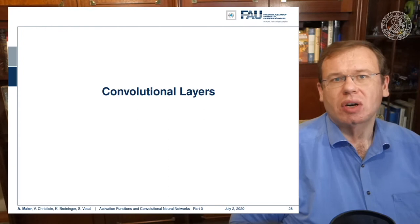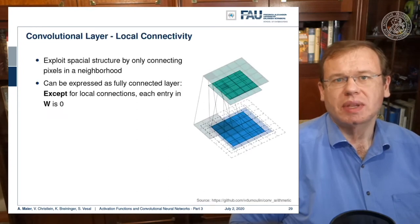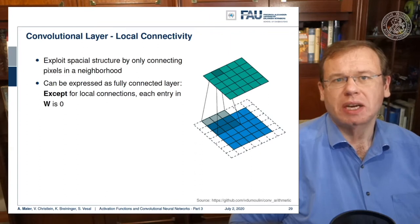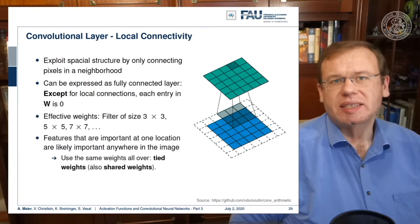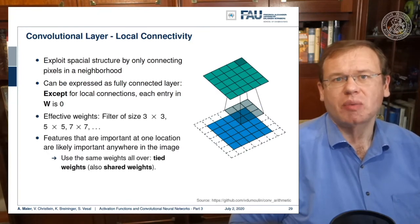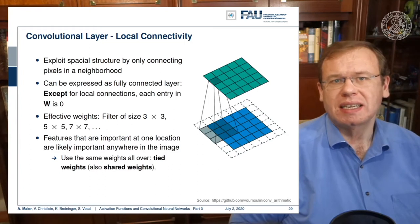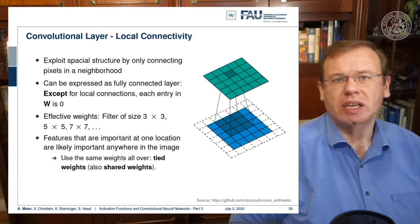Let's start with the convolutional layers. The idea here is that we want to exploit the spatial structure by only connecting pixels in a neighborhood. This can then be expressed in a fully connected layer, except if we want to express this in a matrix, we could set every entry to zero except the connections that are in the receptive field.